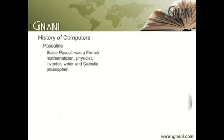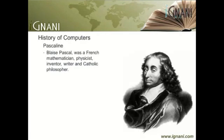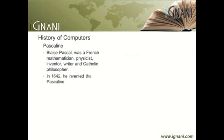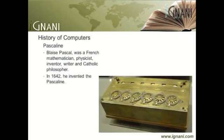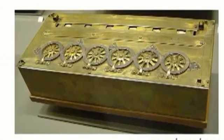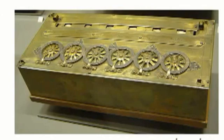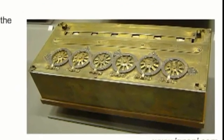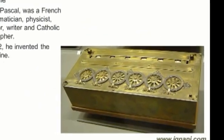Pascaline: Blaise Pascal was a French mathematician, physicist, inventor, writer, and Catholic philosopher. In 1642, in an effort to ease his father's endless, exhausting calculations and recalculations of taxes owed and paid, Pascal — not yet 19 — constructed a mechanical calculator capable of addition and subtraction, called Pascal's calculator or the Pascaline. This is an early Pascaline on display at the Musée des Arts et Métiers Museum in Paris. It was made up of counter wheels and was capable of performing addition, subtraction, multiplication, and division.